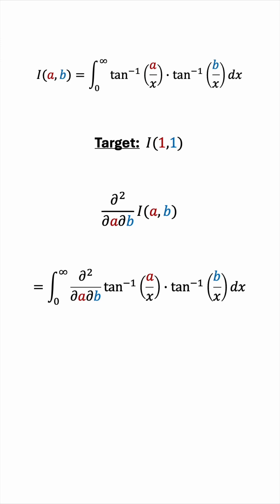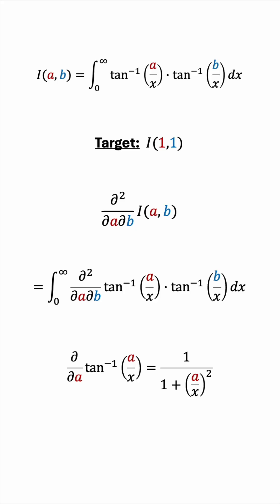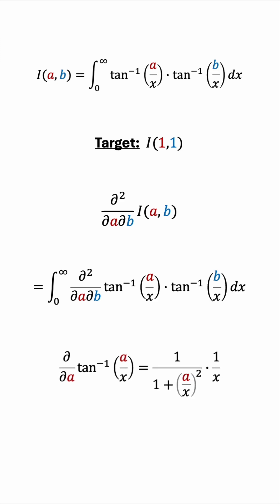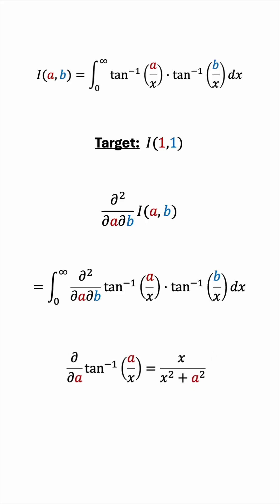So now we have to take the partial derivatives with respect to a and with respect to b of this product of two inverse tangent functions inside the integral. The derivative d/da of arctan(a/x) is 1 over 1 plus the argument squared, and then we use the chain rule — multiply by the derivative of the argument a/x with respect to a, which is 1/x. We can expand the square, multiply top and bottom by x², and cancel an x term. Of course, d/db of arctan(b/x) will be very similar. So the integral becomes the following expression.